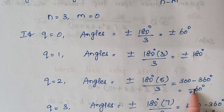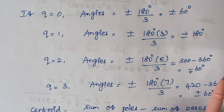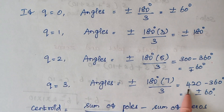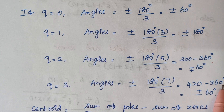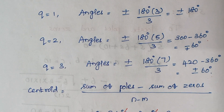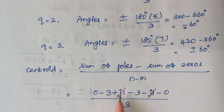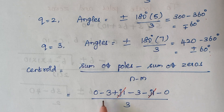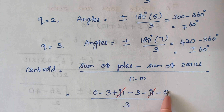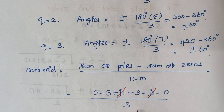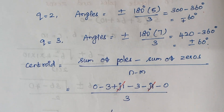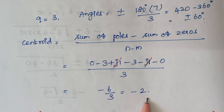So the asymptote angles are minus 60, plus 60, and 180 degrees. Next is finding the centroid, which is the sum of poles minus sum of zeros, divided by n minus m. The pole values are 0, minus 3 plus J1, and minus 3 minus J1. Adding them: 0 plus (−3+J1) plus (−3−J1) = −6. There are no zeros, so it is −6 divided by 3 minus 0, giving a centroid of minus 2.